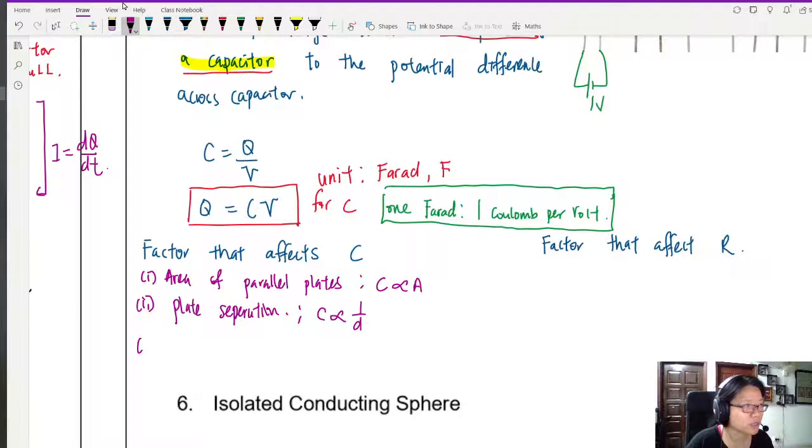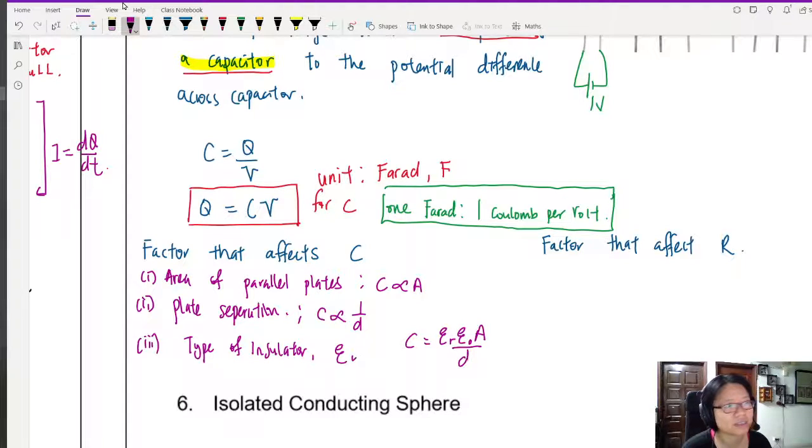And of course, what we stuff in between the parallel plate also matters. So the type of insulator. This one is represented by epsilon R. But in your CIE syllabus, we will stick to vacuum. Because that's where we draw the line. So is there an equation here, just for you to know? The C here will be equal to epsilon R epsilon naught A over D. But this is not in your syllabus.